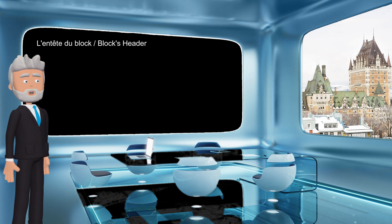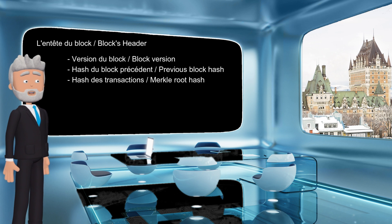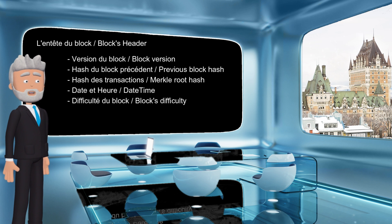L'entête, quant à elle, la pierre angulaire du concept de la blockchain, comporte la version de la technologie du bloc utilisé, le hash du bloc précédent, le hash de toutes les transactions dans le Merkle Tree, la date et l'heure, la difficulté du bloc, et le numéro qui générera le bon hash en fonction de la bonne difficulté.